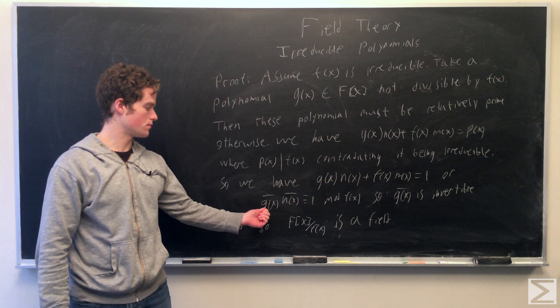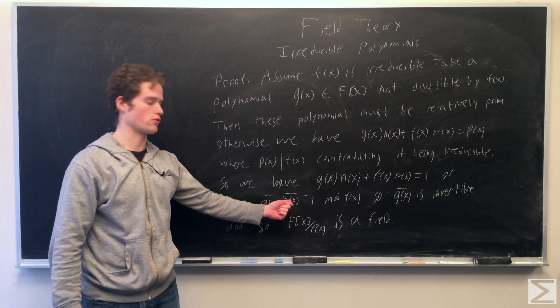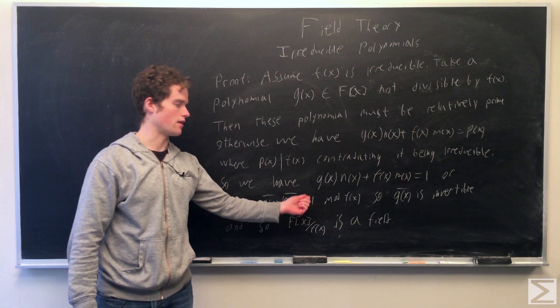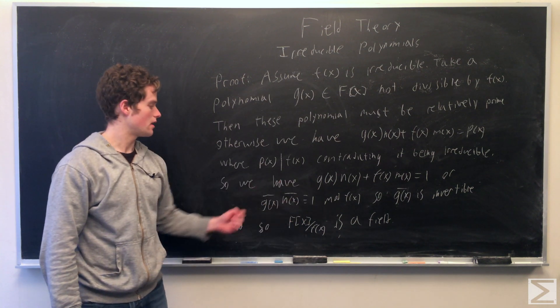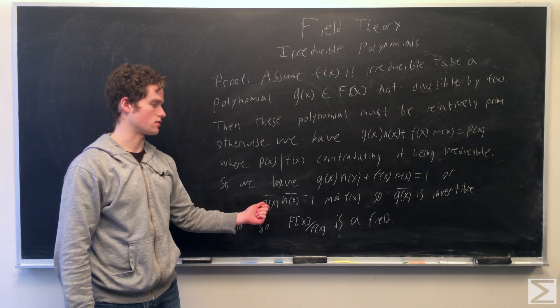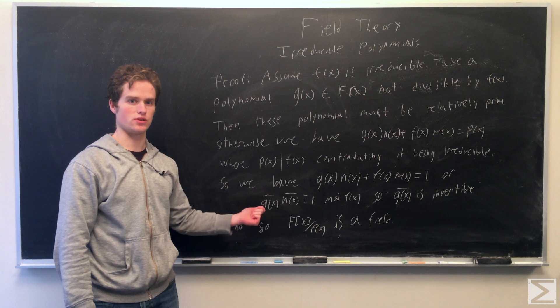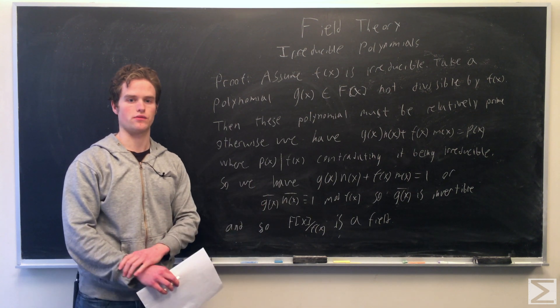We know g of x in our quotient ring times n of x in our quotient ring would be congruent to one modulo f of x. And so g of x in our quotient ring has an inverse. And so we see for an element in our quotient ring that is not equal to zero, it has an inverse. And so this quotient ring is in fact a field.